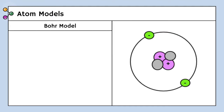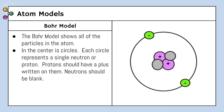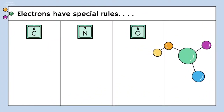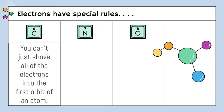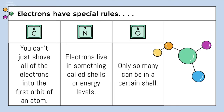There are lots of models of atoms, and we're going to concentrate today on the Bohr model. The Bohr model shows all of the particles in the atom — all of our subatomic particles that we've already talked about: the electron, neutron, and proton. In the center are circles; each circle represents a single neutron or proton. Protons should have a plus written on them because they have a positive charge. Neutrons should be left blank, or sometimes you will see the neutron with a zero, symbolizing that particle has no charge. In a circle around the nucleus are the electrons, and electrons should have a minus sign because they have a negative electrical charge.